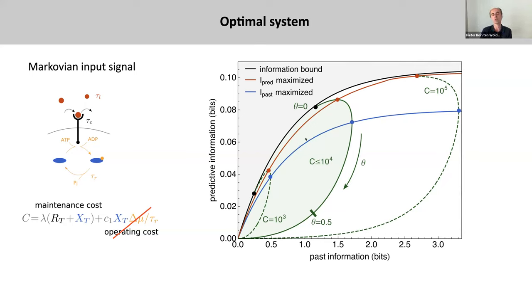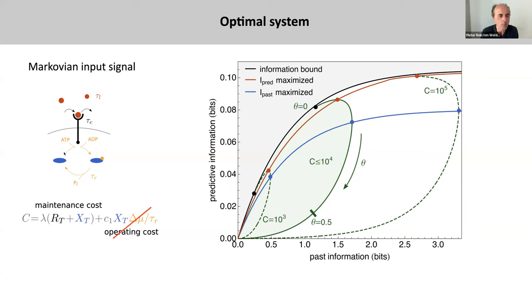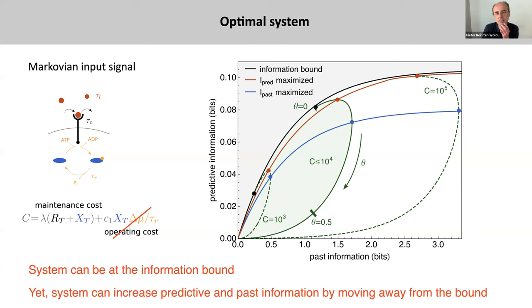Three points were found. First, as you relax the resource constraint — as more readout molecules and receptor molecules can extract information — more past information and predictive information can be obtained. That's not so surprising. But more interesting is that this push-pull network can reach this information bound. And perhaps even more interesting is that the system can increase both its predictive power and its past information by moving away from this bound.